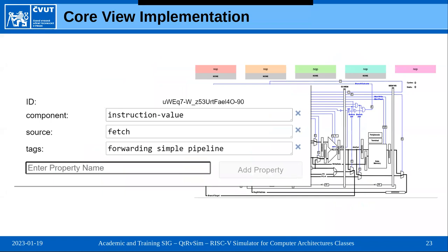For the visualization, previously this was done manually by writing Qt objects, which turned out to be very tedious. Now our visualization uses an SVG file with special annotations to connect each visualized component to the inter-stage register or internal state. We can modify it in a graphical editor and it automatically connects to the CPU state as it is simulated.